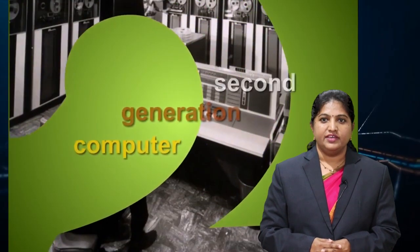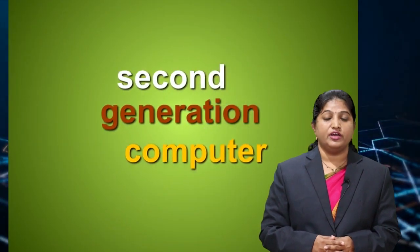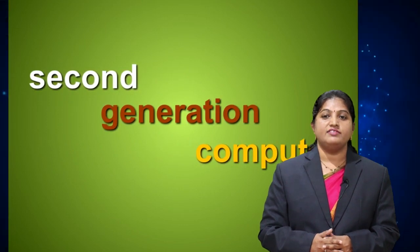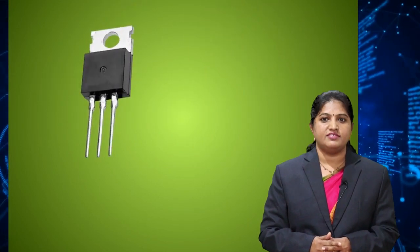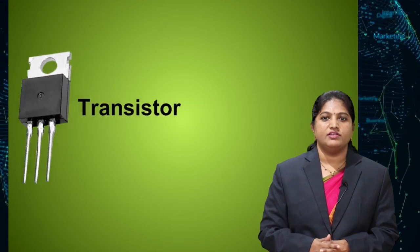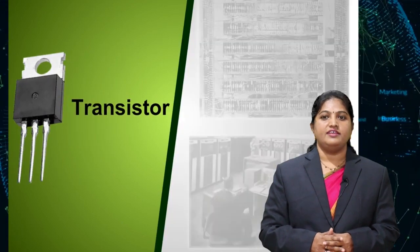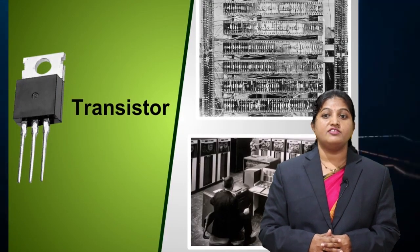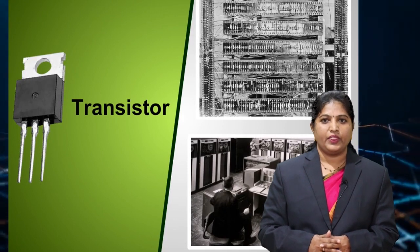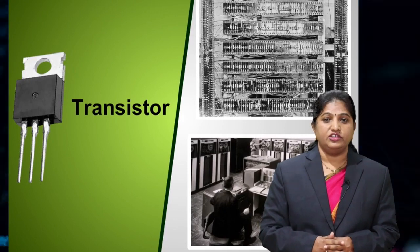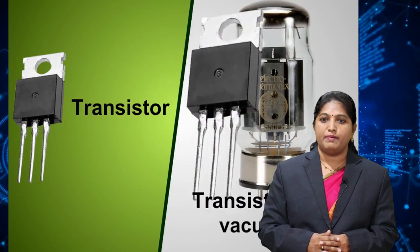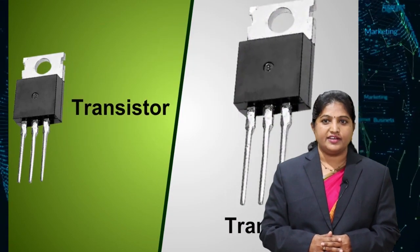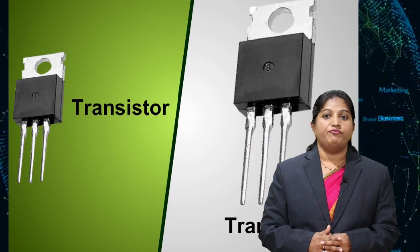The period of the second generation computer was 1956 to 1963, using transistors. Transistors replaced the vacuum tubes of the first generation. During this generation, transistors were cheaper, consumed less power, more compact in size, more reliable, and faster than first generation machines.